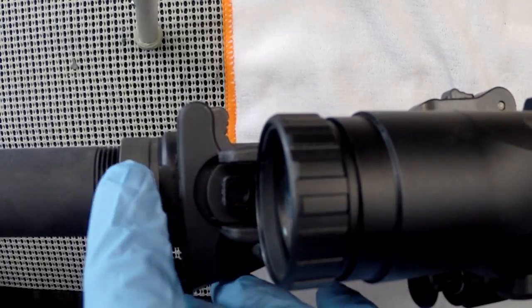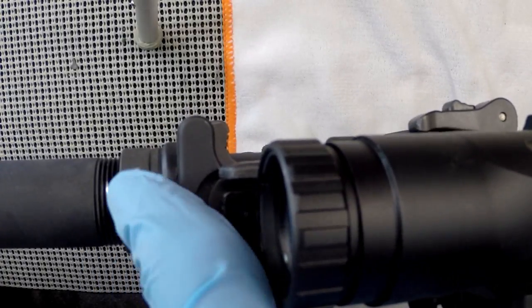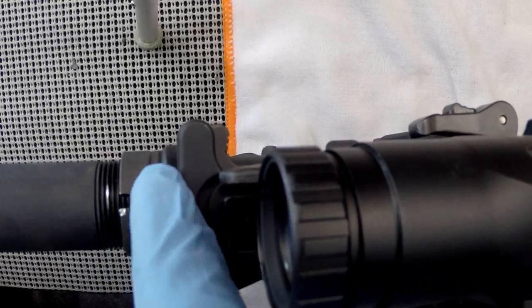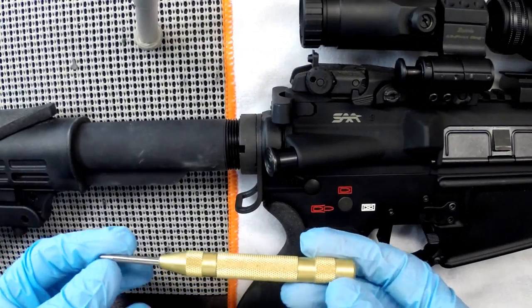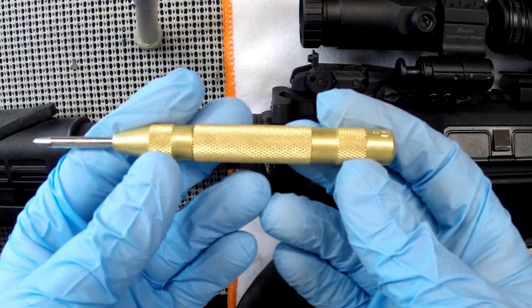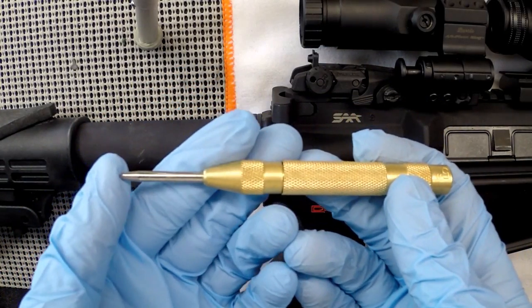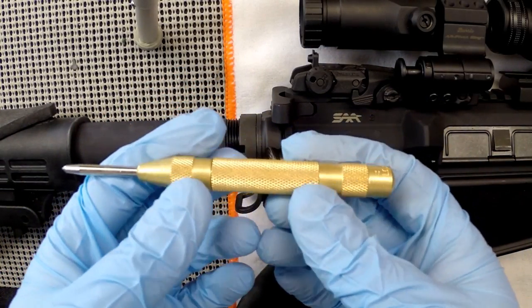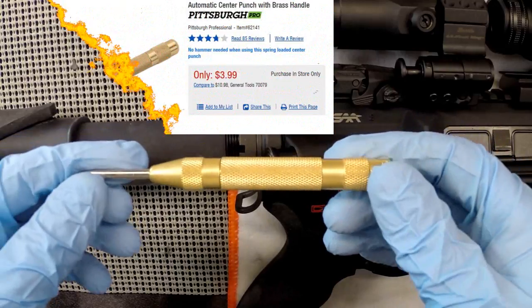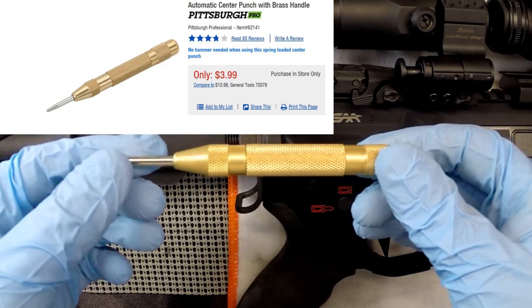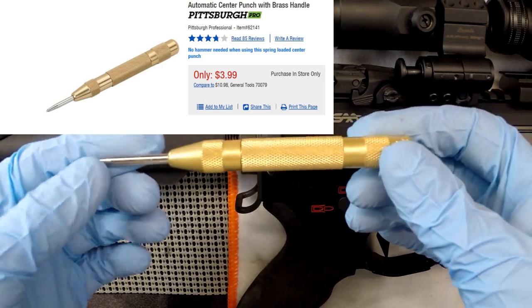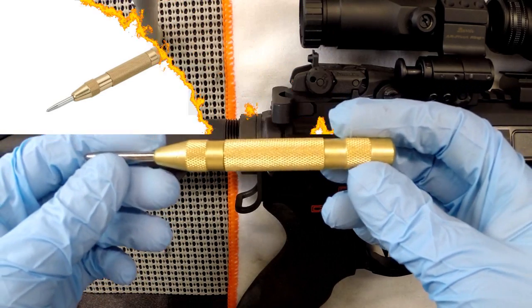A couple different ways to do this job. I like to use spring-loaded automatic center punches. This one is actually from Harbor Freight. It's a Pittsburgh Pro item 621 with a lifetime warranty. I think it was somewhere around like five or six bucks. But that's pretty much all you need to do the job. So with that, let's get going.